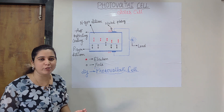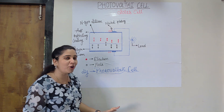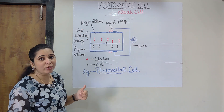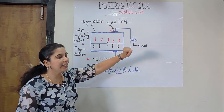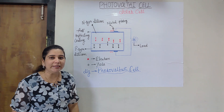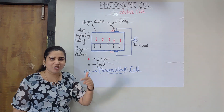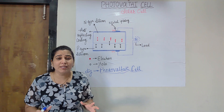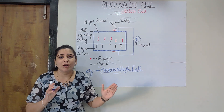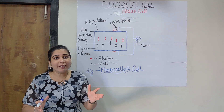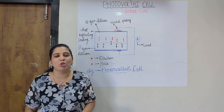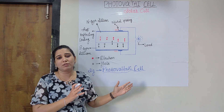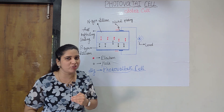In this diagram, you can see a p-type silicon layer and an n-type silicon layer, with an anti-reflecting coating, nickel plating electrodes, and a load. The red colored dots represent electrons while the black represent holes. The principle of the photovoltaic cell is that it converts solar energy directly into electrical energy, which can be used for e-bikes, vehicles, and wherever electrical energy is required.